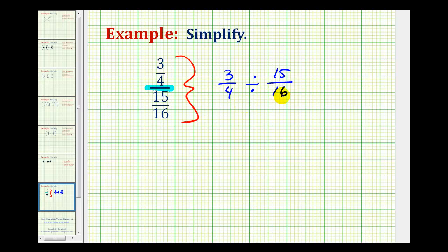And then we'll rewrite this as a multiplication problem. Dividing by fifteen-sixteenths is the same as multiplying by sixteen-fifteenths, or the reciprocal of this fraction. So this is equivalent to three-fourths times sixteen-fifteenths.